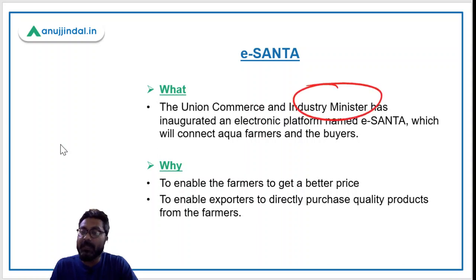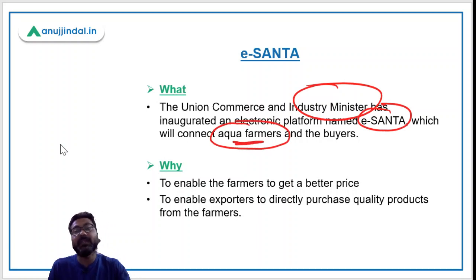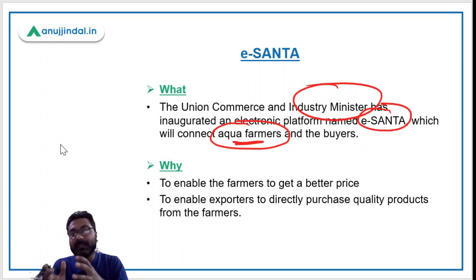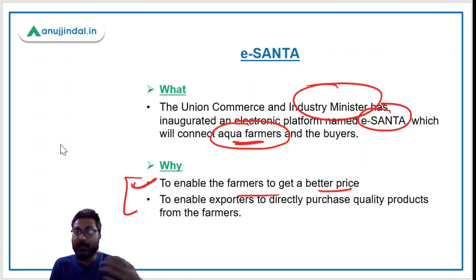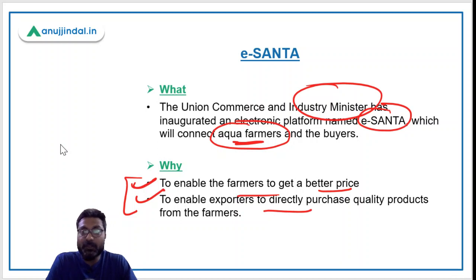The union Commerce and Industry Minister Mr. Piyush Goyal launched this electronic platform known as e-SANTA. The basic objective of this platform is to connect aqua farmers with buyers and exporters. It will have a dual objective: number one, it will enable the farmers to get a better price for their products, and number two, it will enable exporters to directly purchase quality products from farmers, eliminating the middleman.